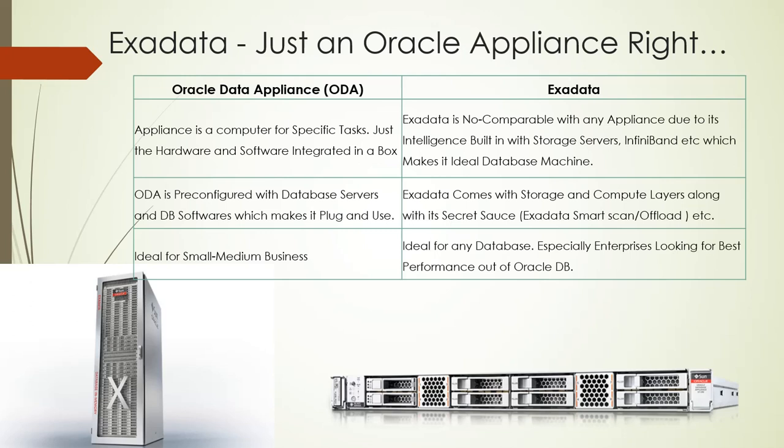Its configuration makes it ideal for any database machine. ODA is pre-configured with database server and database software, which makes it plug-and-ready to use. Exadata comes with a storage layer and a database layer, along with its secret sauce of Exadata smart scan, cell offloading, etc. ODA is ideal for small and medium businesses, whereas Exadata is ideal for any database workload — especially enterprises looking for the best performance with high availability out of Oracle databases.